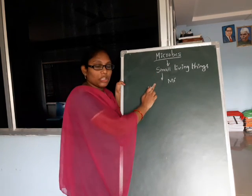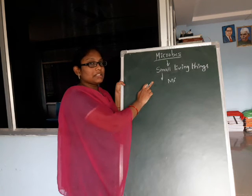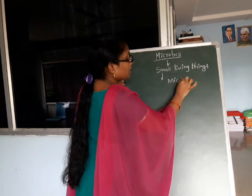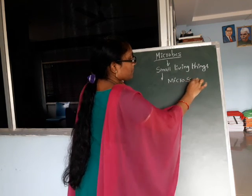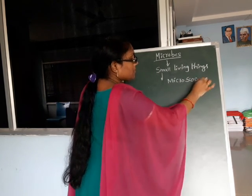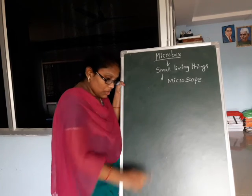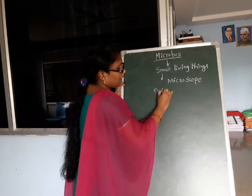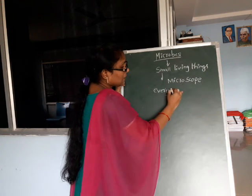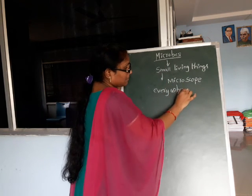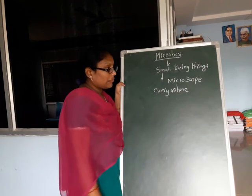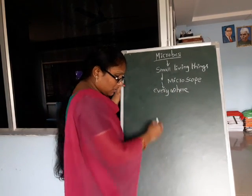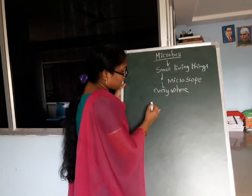Microbes are the small living things. They can be seen only under a microscope. Microbes are found everywhere. They grow rapidly.